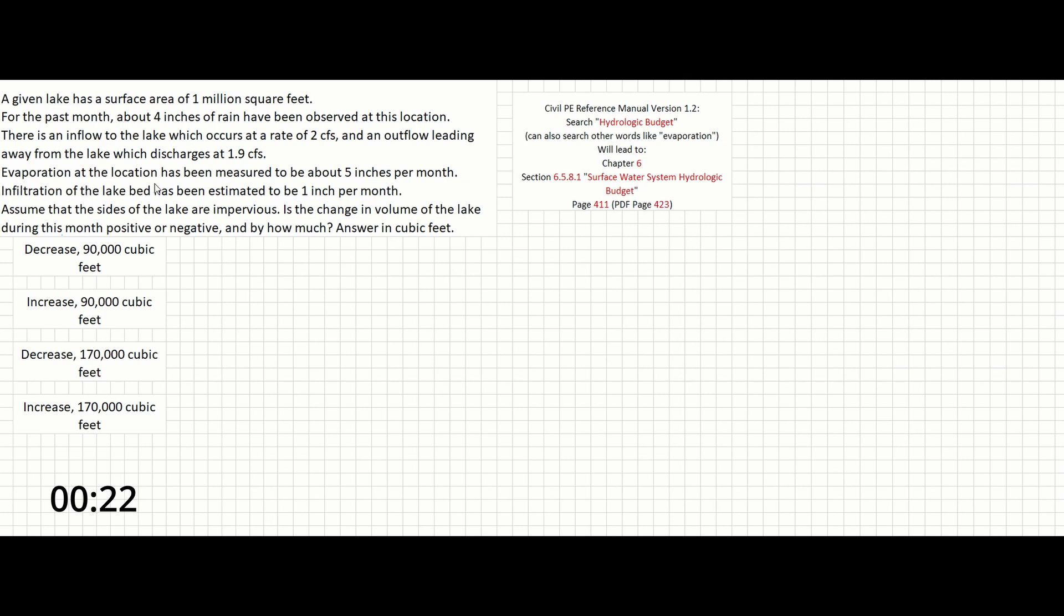Evaporation at the location has been measured to be about 5 inches per month. Infiltration of the lake bed has been estimated to be 1 inch per month. Assume that the sides of the lake are impervious. Is the change in volume of the lake during this month positive or negative, and by how much? Answer in cubic feet.